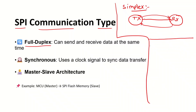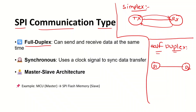The next communication type is half duplex. Here, one device is device 1 and the other is device 2, connected by one line. You can send data from D1 to D2, as well as from D2 to D1, but not at the same time. You can send and receive data, but not simultaneously. That is called half duplex communication.